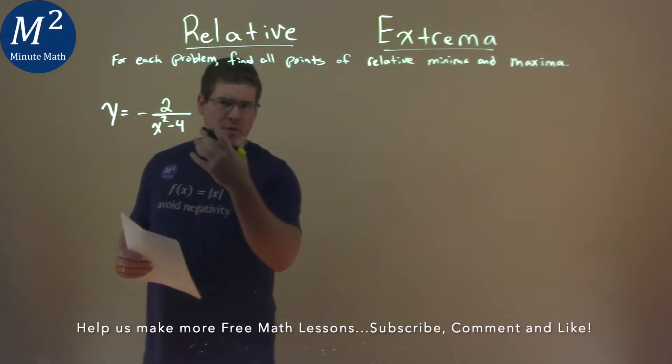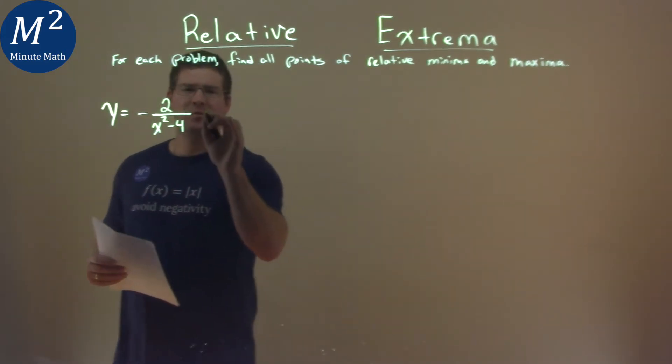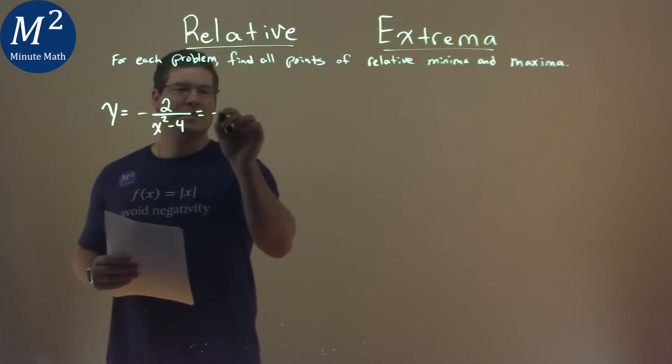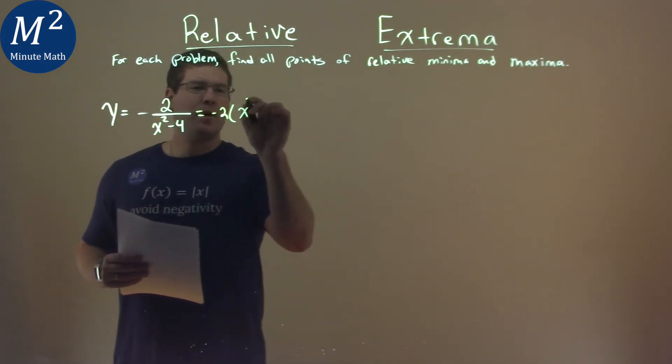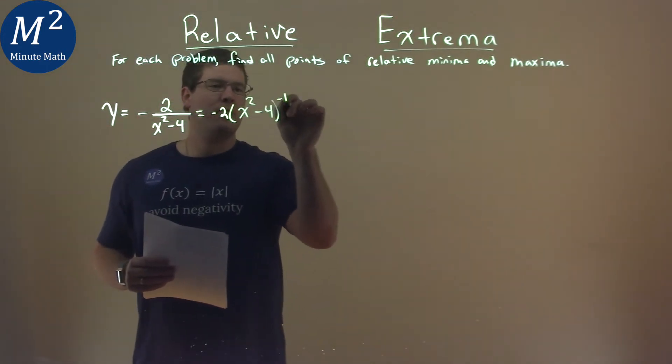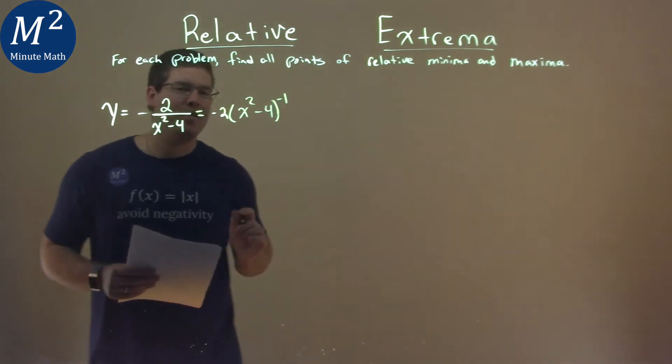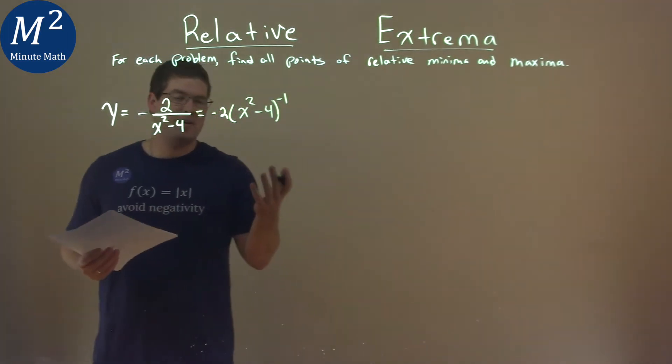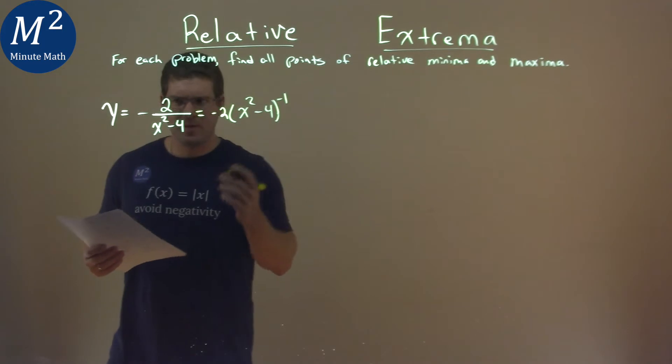Well, we need to find the derivative of this function, and I like to actually rewrite this to look like negative 2 times x squared minus 4 to the negative 1 power. I like to write the function that way to make the derivative just easier for me.